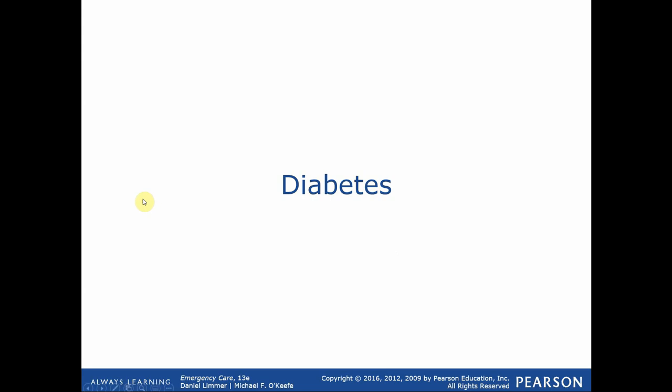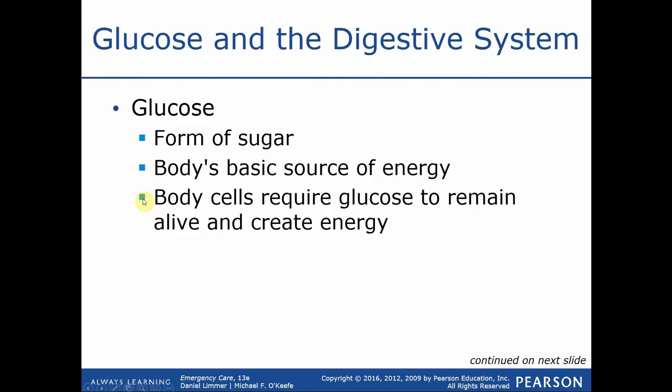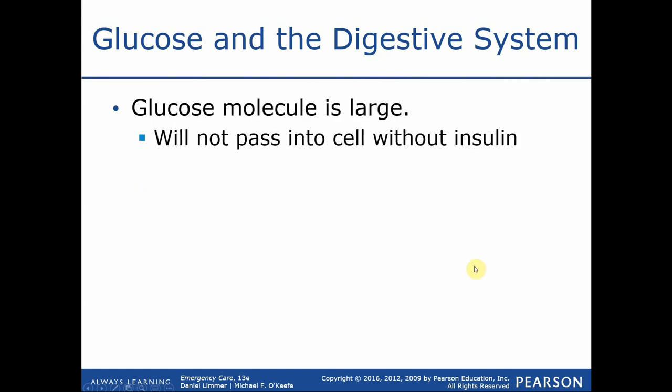Moving into diabetes — it's an emergency we deal with on a regular basis, and having a good understanding of how it affects the body is very valuable in patient care. We said water, oxygen, and glucose are the three things the brain needs to function properly. With diabetes, this is going to be a glucose issue. Glucose is a form of sugar in the body that circulates through the bloodstream and is utilized by cells along with oxygen to create adenosine triphosphate — energy — which keeps us functioning and alive.